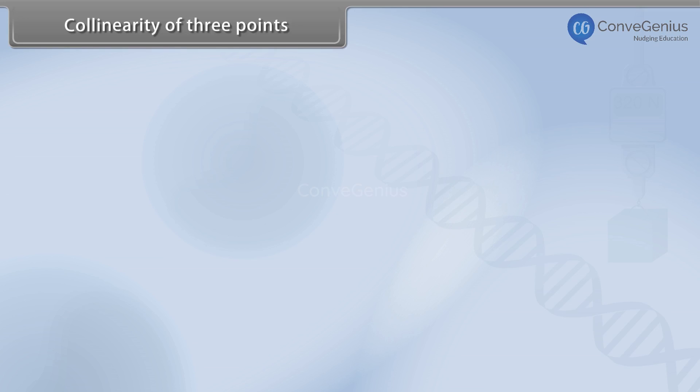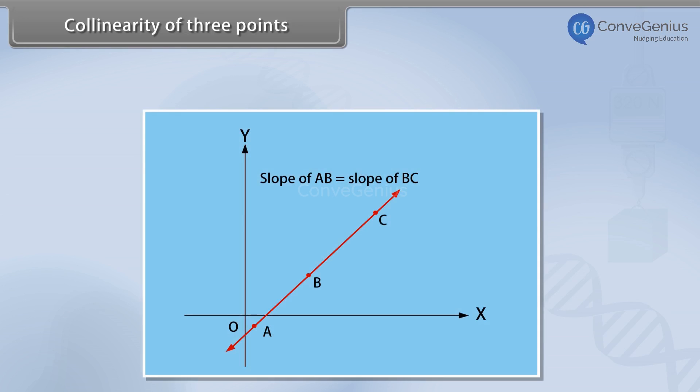Collinearity of three points. Look at this figure. Here the points A, B and C are collinear because they lie on the same line.